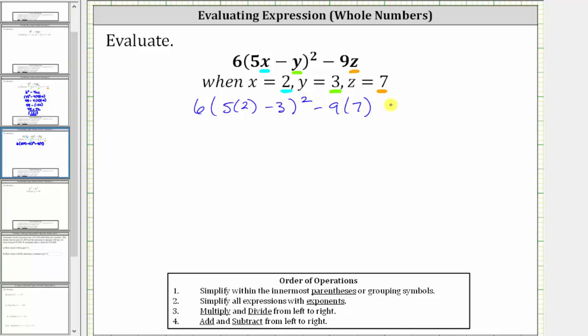Now we evaluate the expression following the order of operations. For the first step, we simplify within the parentheses. Notice inside the parentheses here, we have multiplication and subtraction. We multiply and divide before we add and subtract. Therefore, the first step is to determine 5 times 2, which is 10.